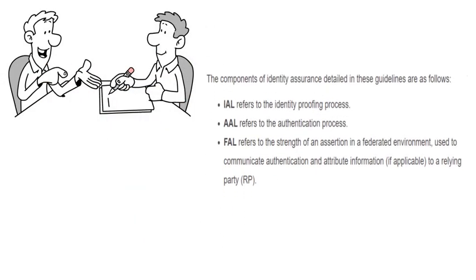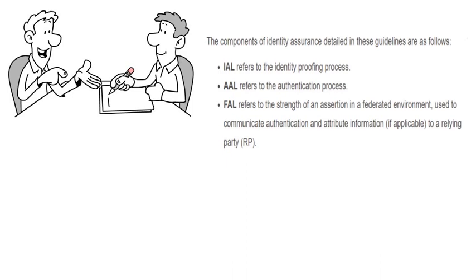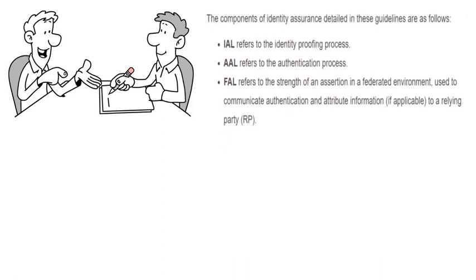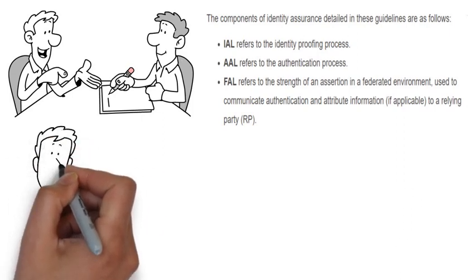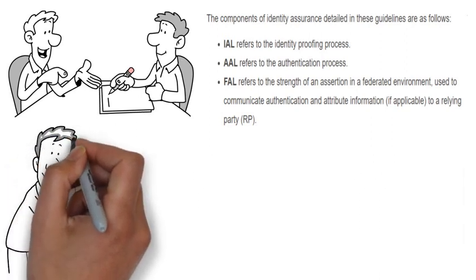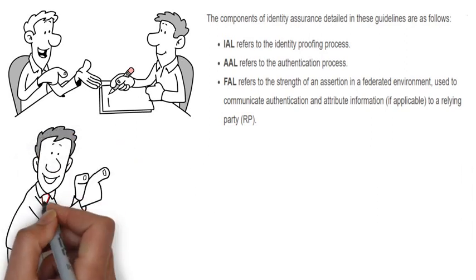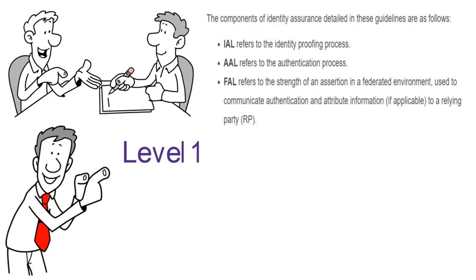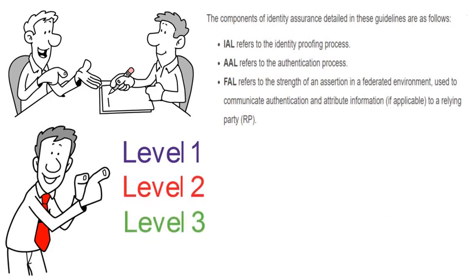Digital identity considers three different identity categories. These categories are IAL, AAL, and FAL. At the end of your digital identity determination, you will arrive at one of the following three levels for each of those categories: level one, level two, and level three.